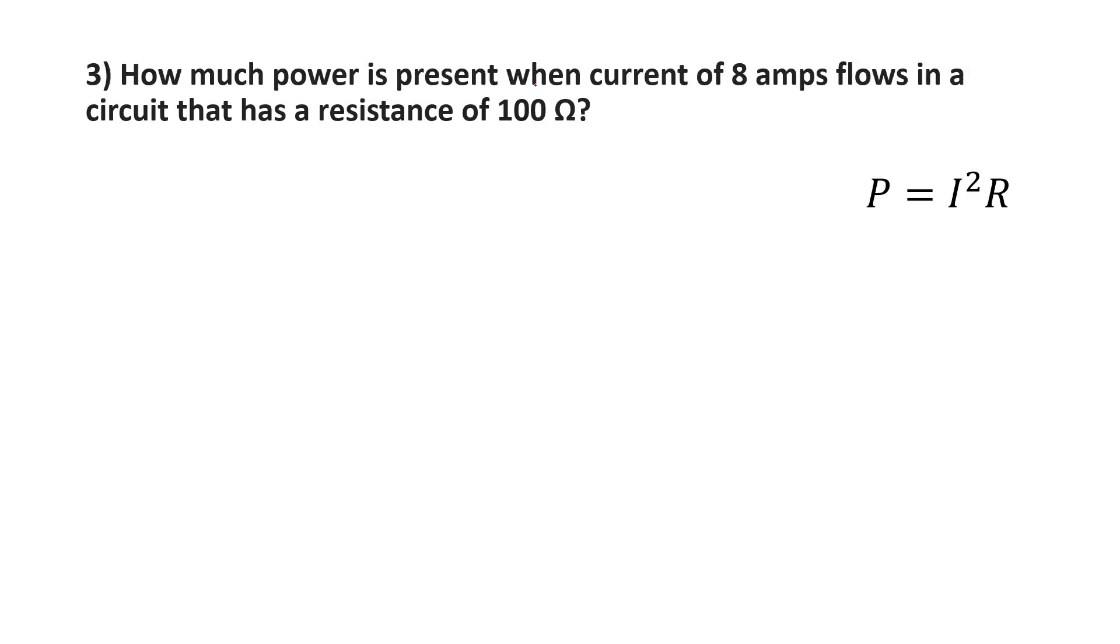How much power is present when the current of 8 amps flows in a circuit that has a resistance of 100 ohms? You wouldn't have this given to you; it would be on an equation sheet. So you have to make the givens list based on what you're given. They ask us for how much power, they tell us it's 8 amps of current, and they tell us resistance of 100 ohms. So that's going to lead you to this equation, and you don't have to rearrange it because it's already set up for P. Plug in the values, and you get 6,400 watts for your answer.